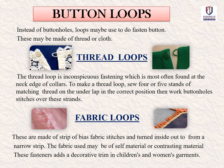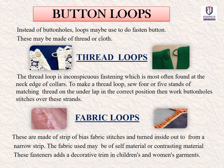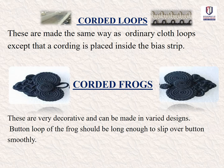Instead of buttonholes, loops may be used to fasten buttons. These may be made of thread or cloth. A thread loop is an inconspicuous fastening most often found at the neck edge of collars; sew 4 or 5 strands of matching thread in the correct position, then work buttonhole stitches over these strands. Fabric loops are made from a strip of biased fabric, stitched and turned inside out to form a narrow strip, using self or contrasting material. Corded loops are made the same way as ordinary cloth loops except that a cording is placed inside the bias strip. Corded frogs are very decorative and can be made in various designs. Button loops should be long enough to slip over buttons smoothly.